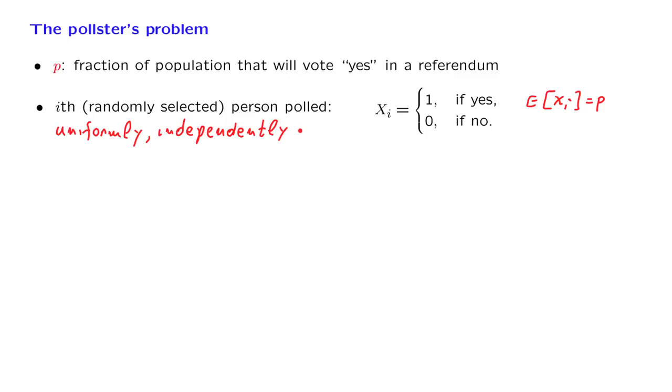So how do we proceed? We look at the results that we got from the people that we polled. We count how many said yes, divide by n, and this gives us the fraction of yeses in the sample that we have obtained. And this is a pretty reasonable estimate for the unknown fraction p, the fraction of yeses in the overall population.